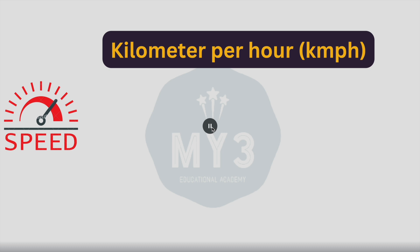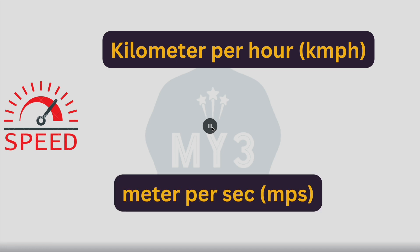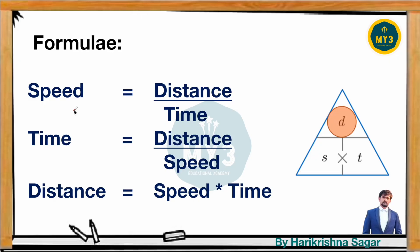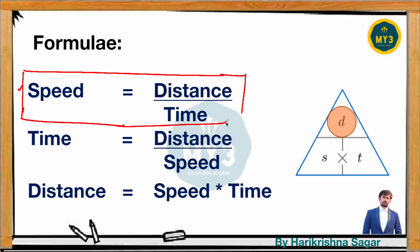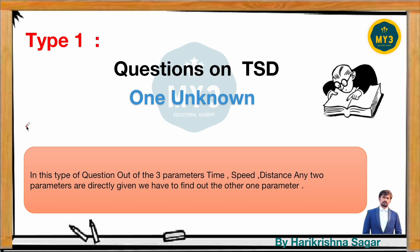Sometimes we will express the speed in kilometers per hour, and sometimes in meters per second. So speed is defined as distance divided by time. If you rearrange: distance is equal to speed into time, and time is equal to distance divided by speed. You can use these relations to find out speed, time, or distance.